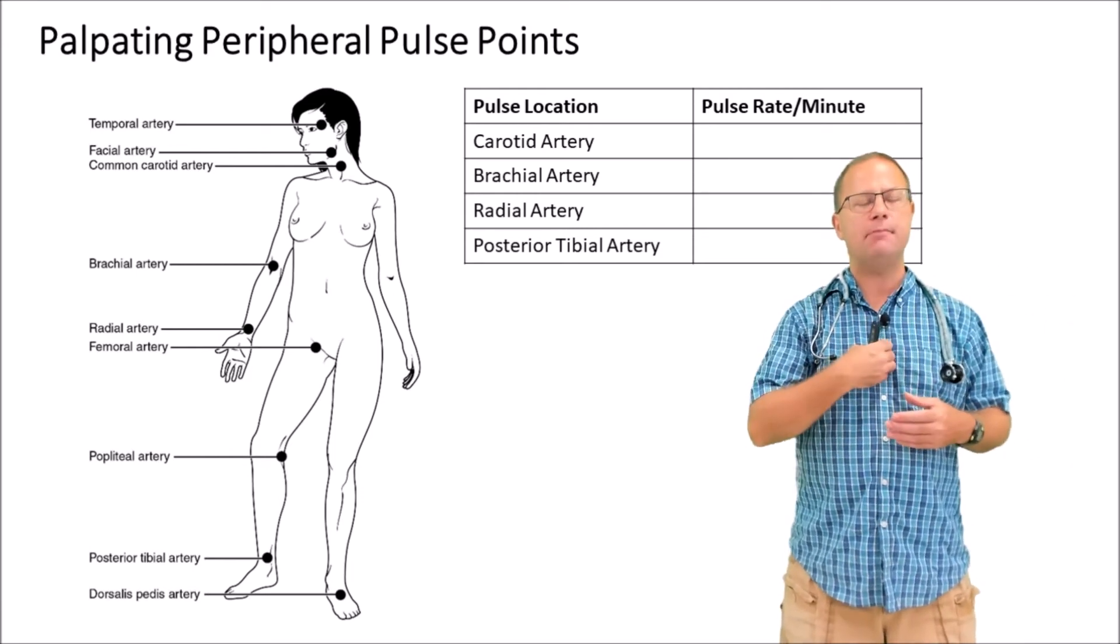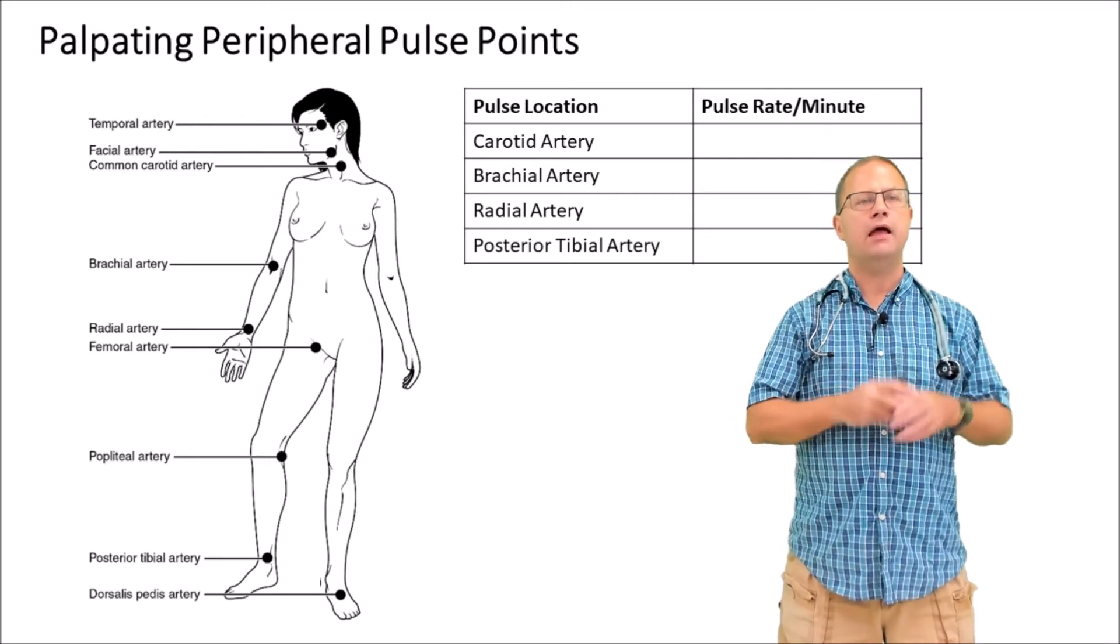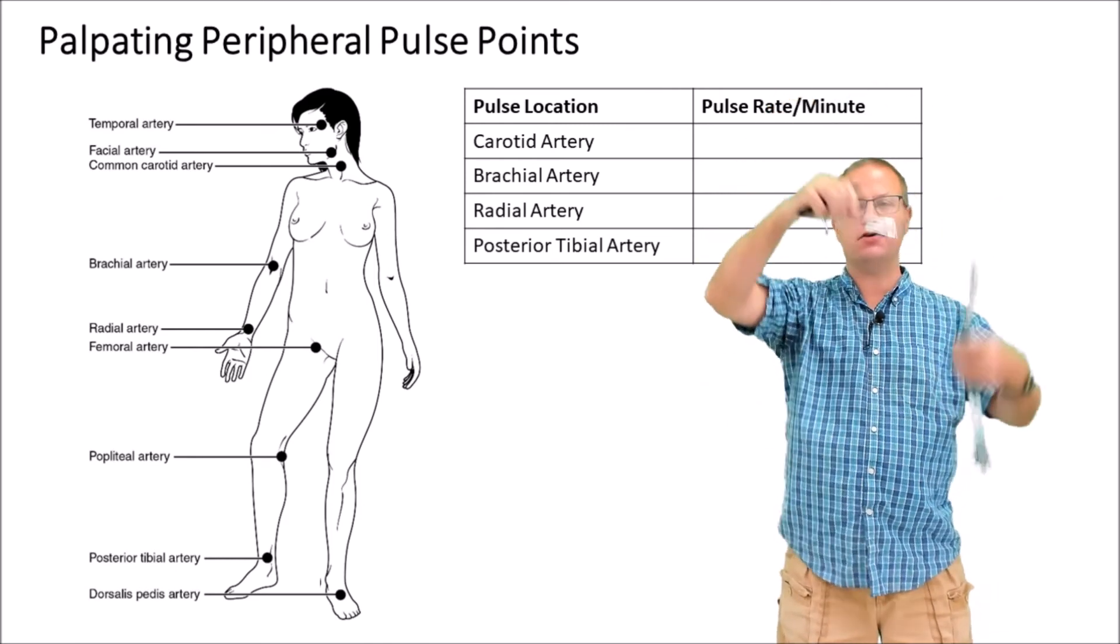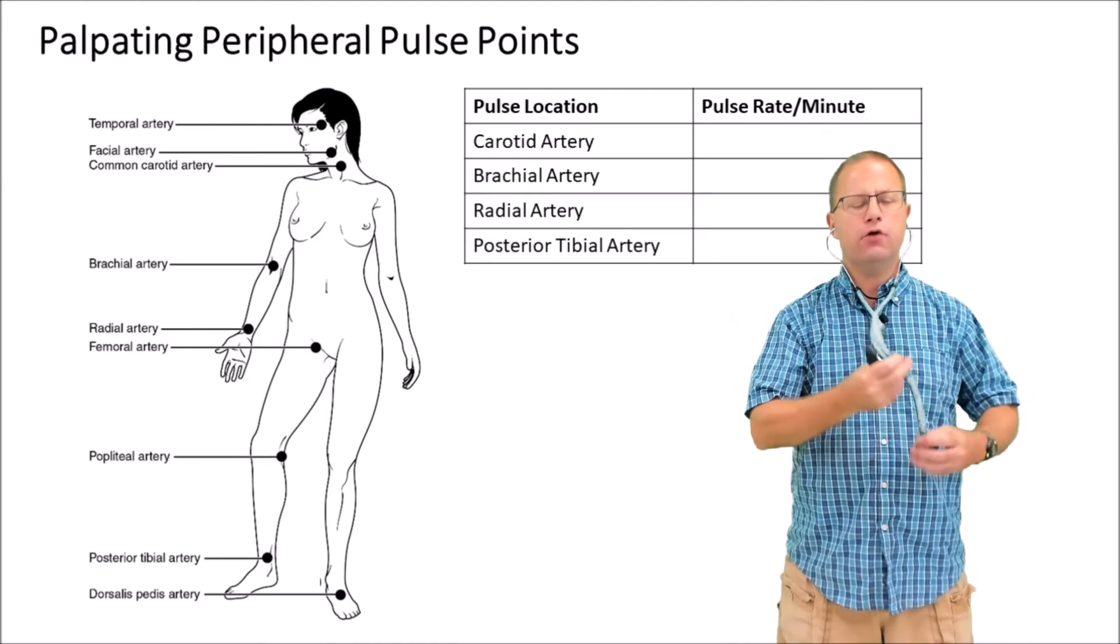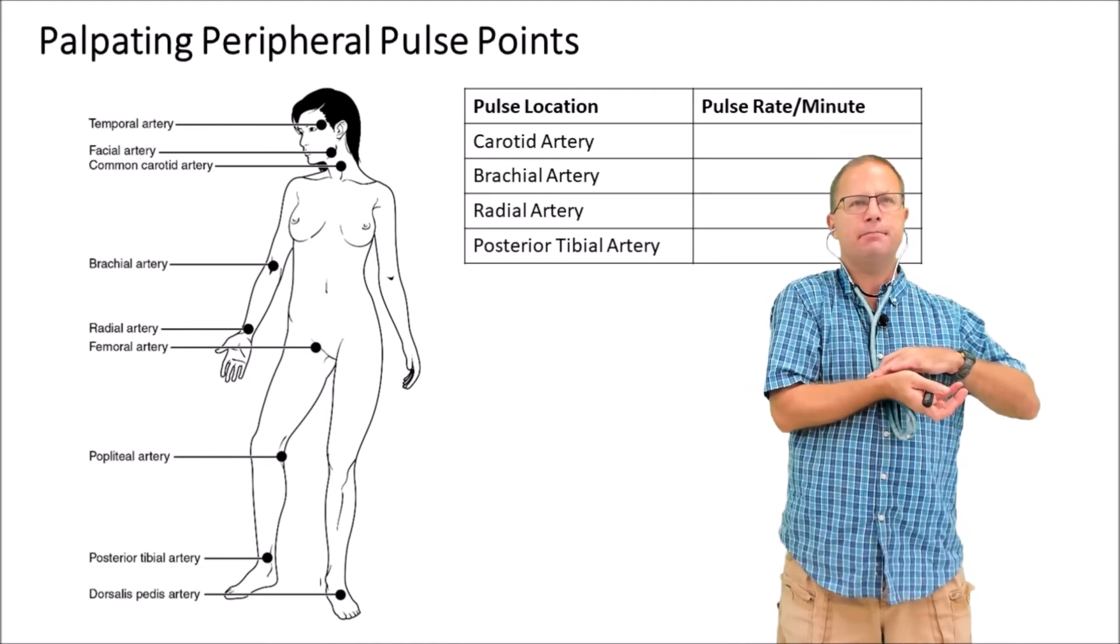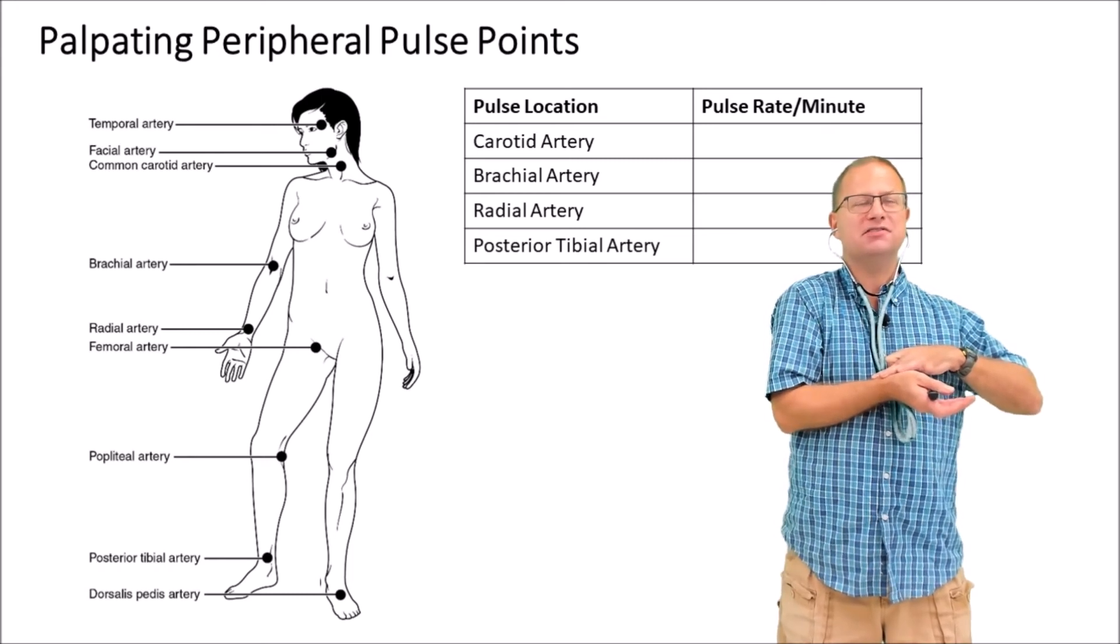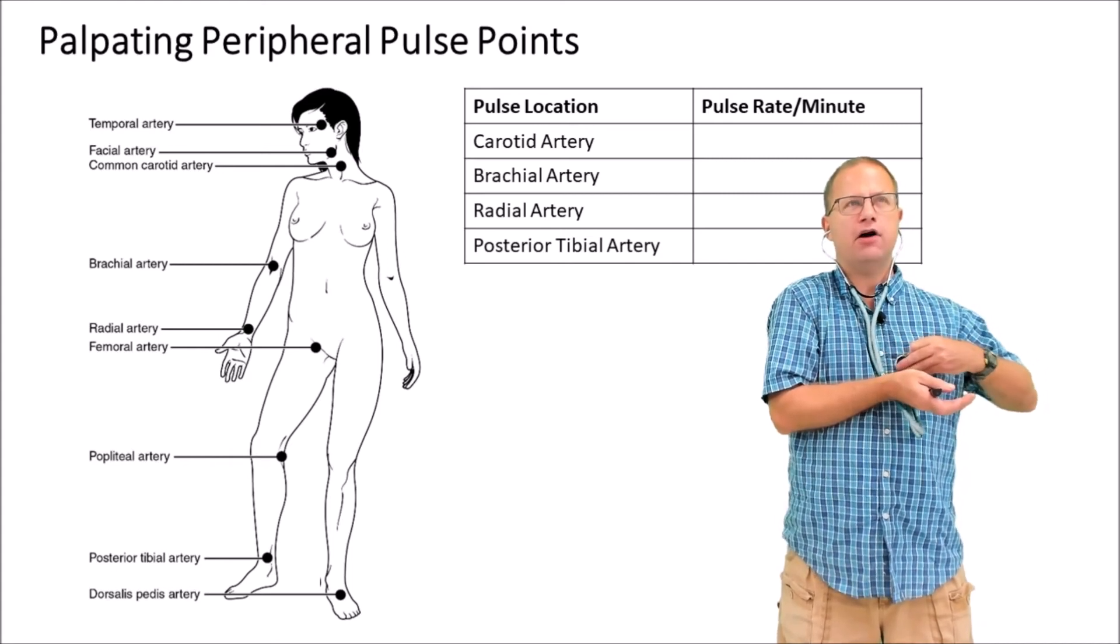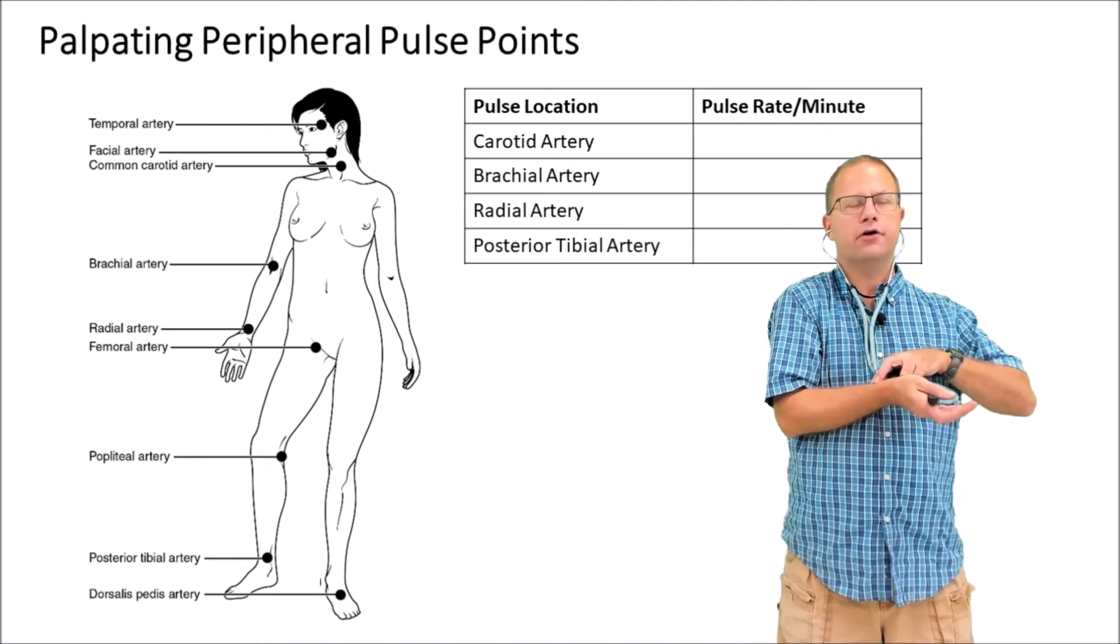Once you've taken measurements at all four points, I want you to put your stethoscope back in your ears correctly and listen for your apical pulse at the same time while palpating your radial pulse. It may be somewhat difficult since you only have two hands, but you should realize that for every heartbeat you hear you should feel a pulse wave in your radial artery.